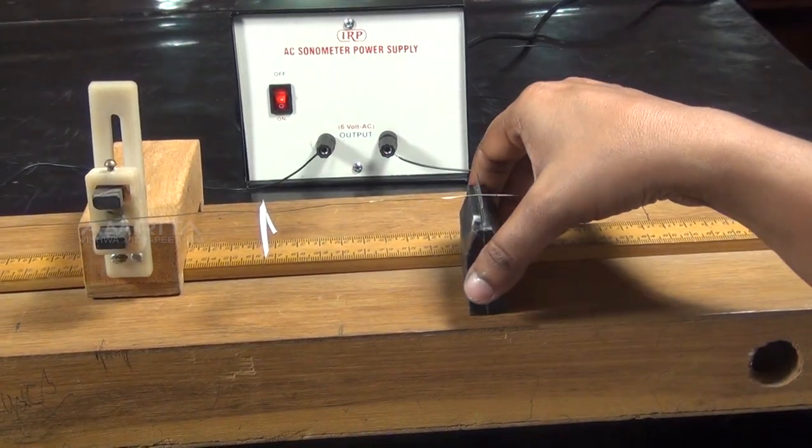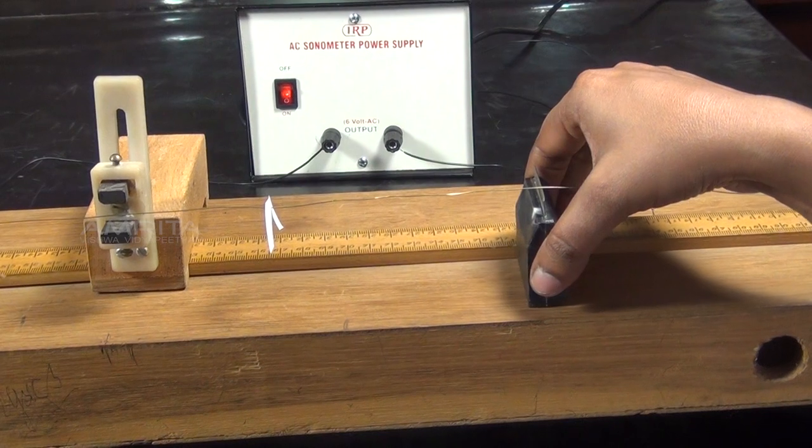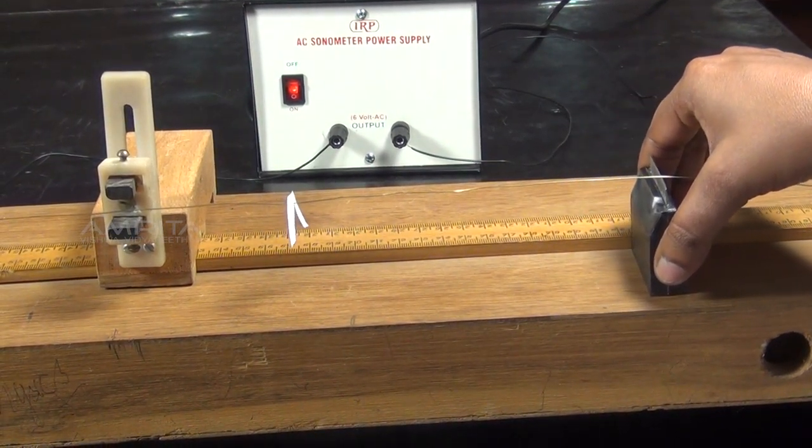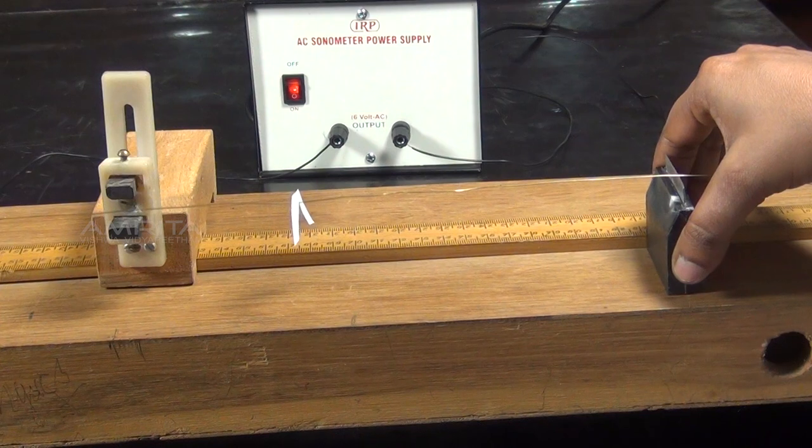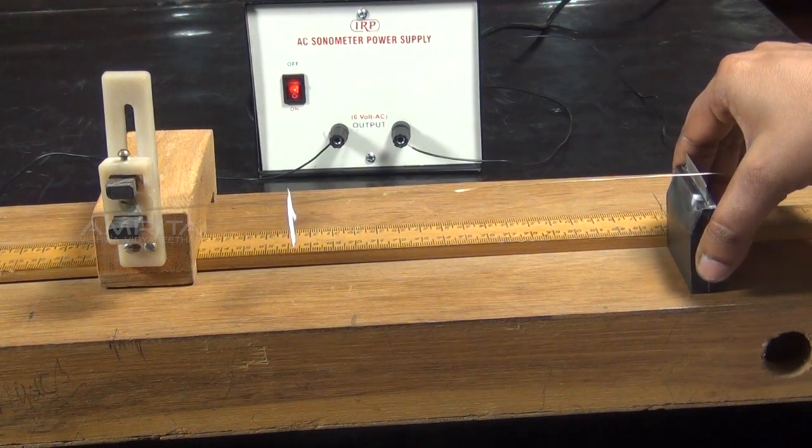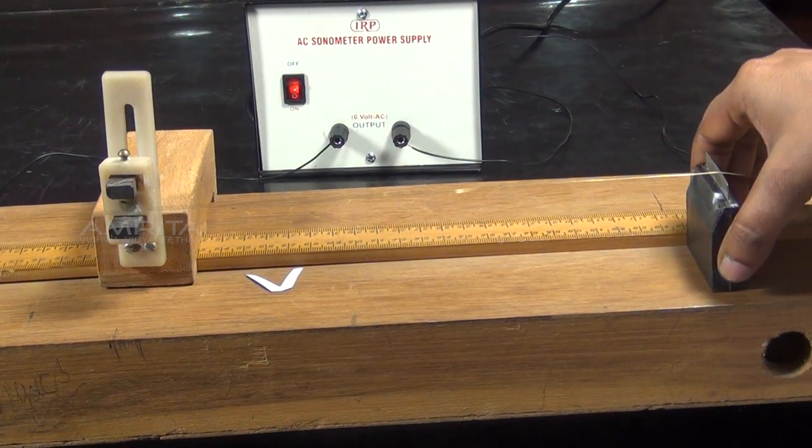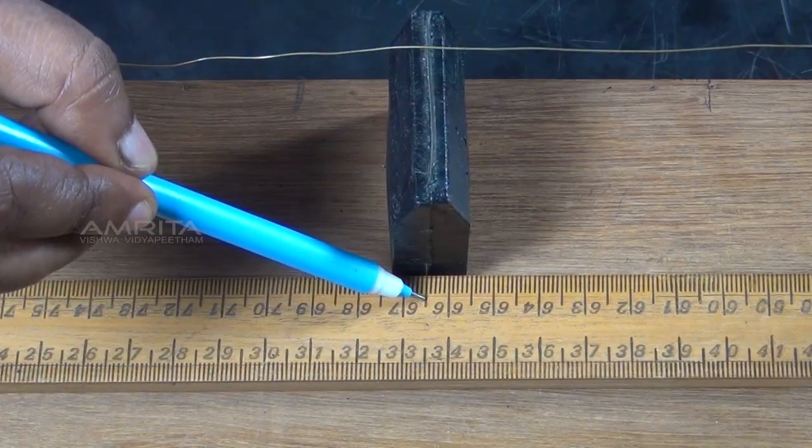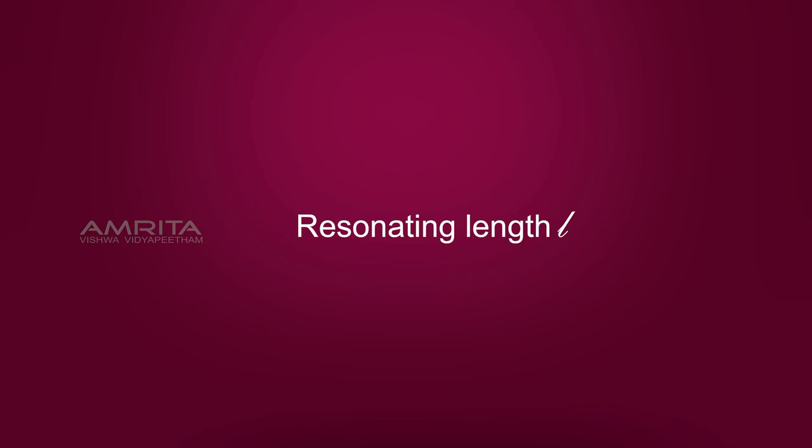The wire begins to vibrate. The length of the wire between the two bridges is adjusted till the wire vibrates with maximum amplitude. At this stage, the paper rider placed on the wire falls which shows the condition of resonance. The length of the wire between the two bridges is measured.